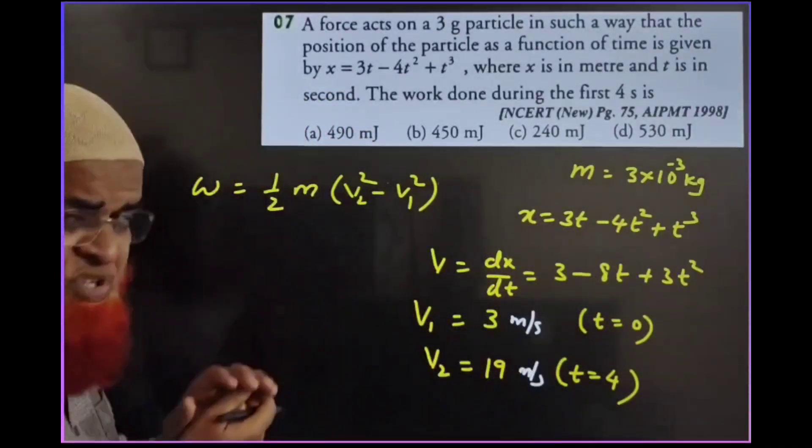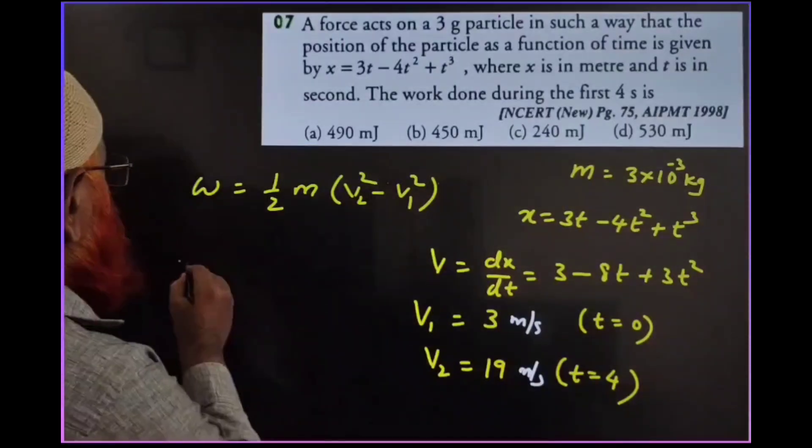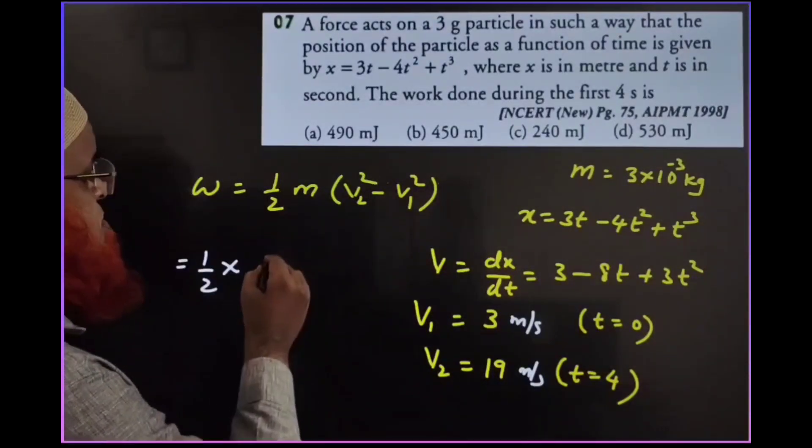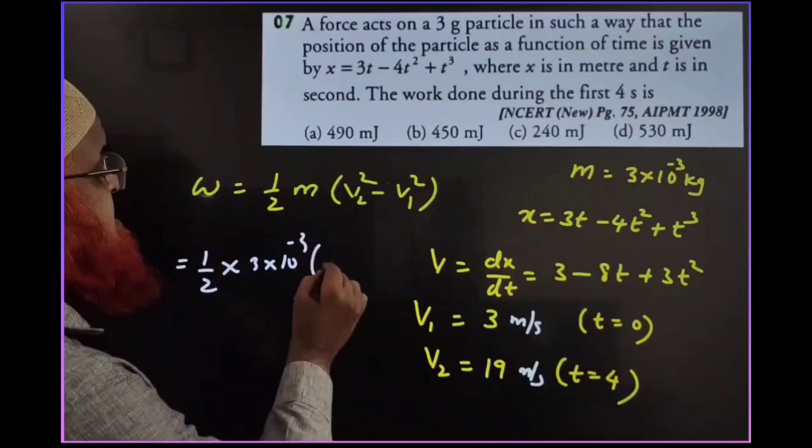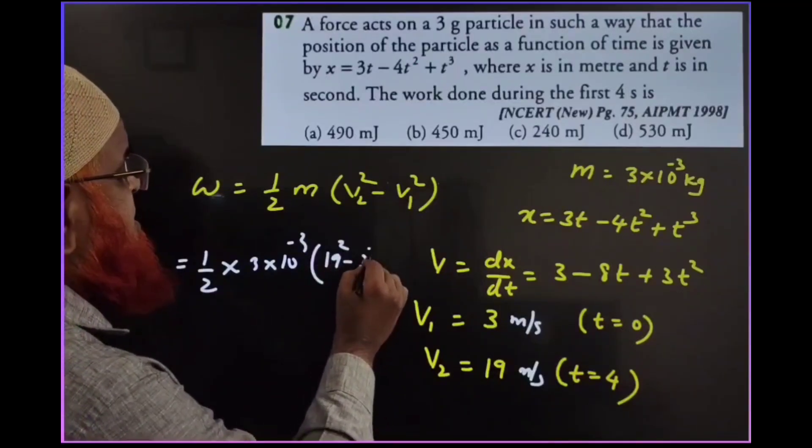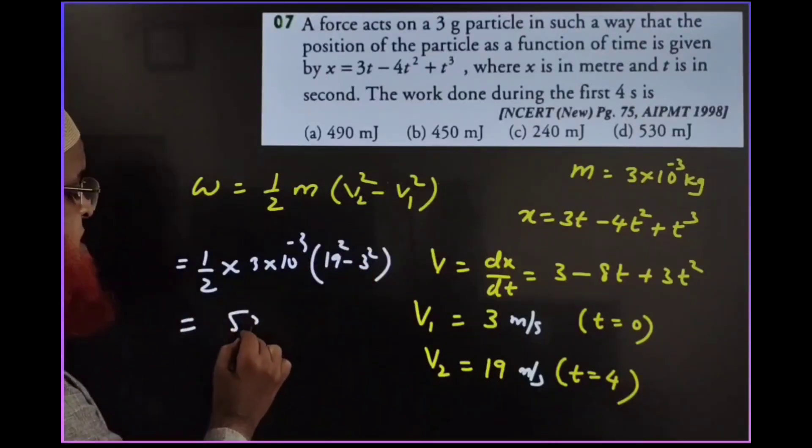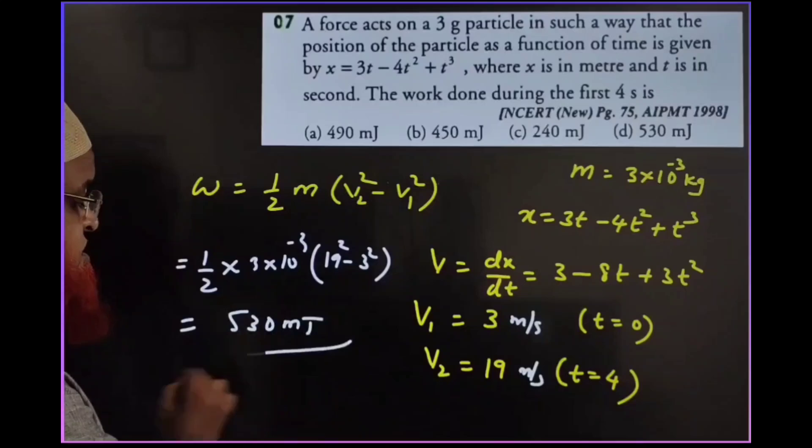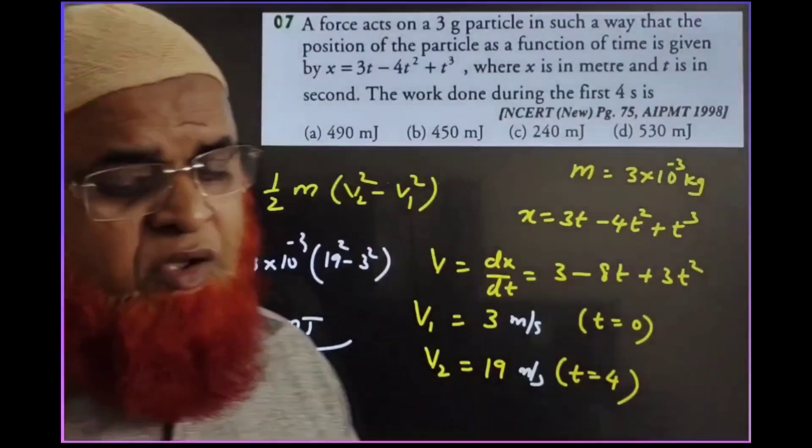After that I use work energy theorem to solve this problem. That means I will write half into mass is 3 into 10 power minus 3 equals 19 square minus 3 square. If I do this one I am getting 530 millijoules here, approximately. Thank you very much.